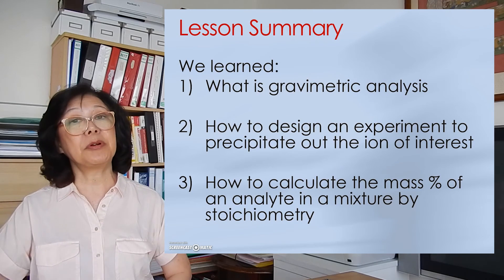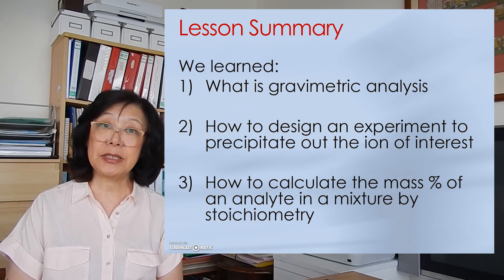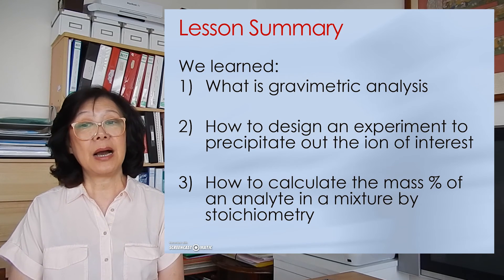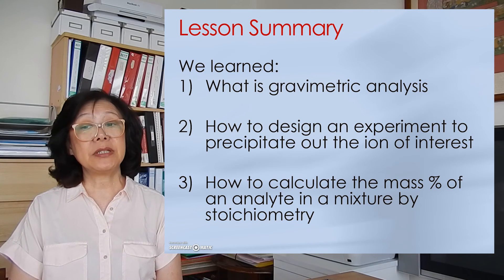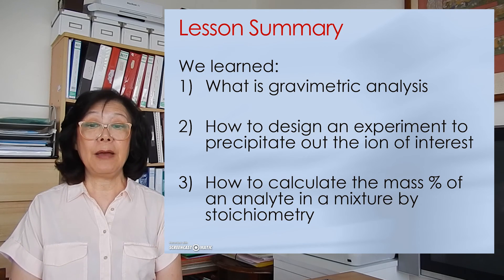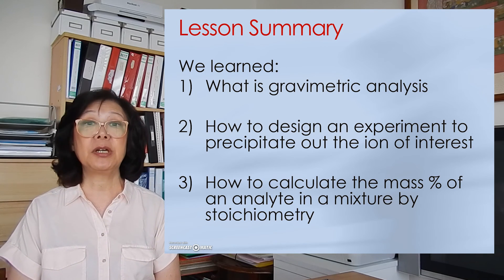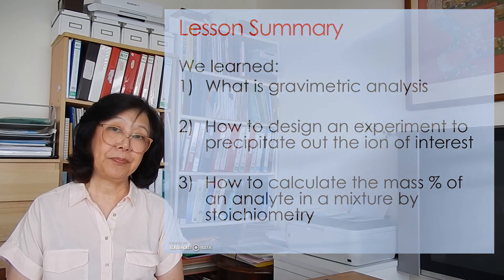Here is a summary of what we have learned today: what gravimetric analysis is — a very important procedure for isolating the ion of interest; how to design an experiment to precipitate the ion of interest; and how to calculate the mass percent of an analyte in a mixture using stoichiometry. I hope you found this lesson useful. I look forward to hearing comments from you and hope to see you again next time.